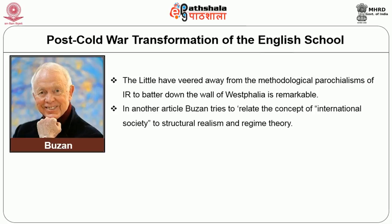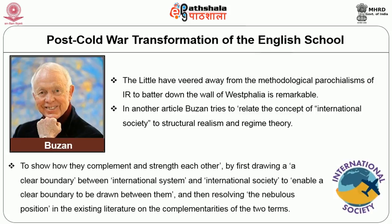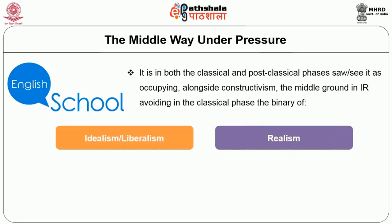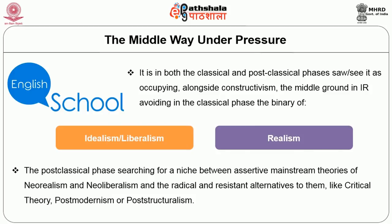In another article, Buzan relates the concept of international society to structural realism and regime theory to show how they complement and strengthen each other. Those who cast their lot with the English school in both the classical and post-classical phases saw it as occupying — alongside constructivism — the middle ground in IR, avoiding the binary of idealism and realism in the classical phase, and in the post-classical phase searching for a niche between assertive mainstream theories of neorealism and neoliberalism and radical alternatives like critical theory, post-modernism or post-structuralism.